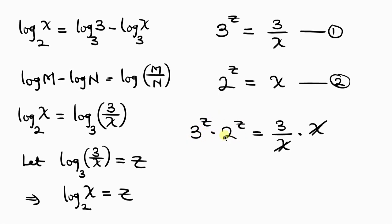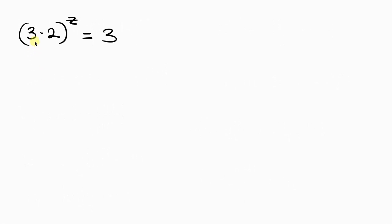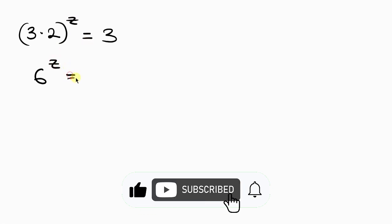So let's just group them. So this is 3 times 2 which are the base and then a common power of z. So this is equal to 3 on the right hand side. And so 3 times 2 that's 6 to the z. This is equal to 3.